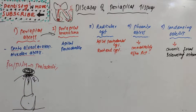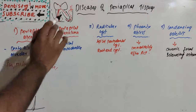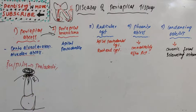Root canal treatment gives a better prognosis; once the infection is completely removed, there will be healing at the periapical area. If left untreated, it may lead to space infections like cellulitis and osteomyelitis, with chances of fistula formation and bacteremia.